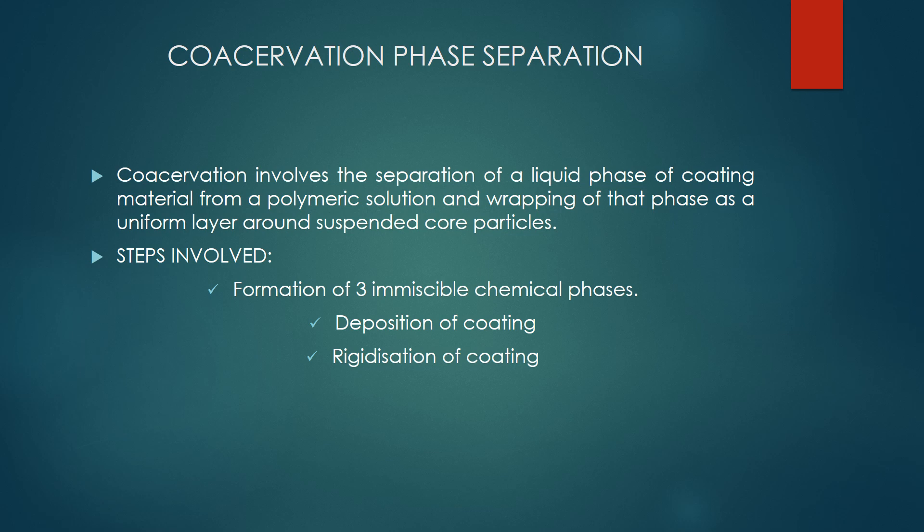Basically, there are three steps involved in coacervation phase separation. First is formation of immiscible chemical phases, because initially there will be one miscible phase in which the drug will be suspended. Second is deposition of the coating material around the API or core material. Third is rigidization of that coating material around the API or core material. The first step — formation of three immiscible chemical phases — will be discussed in today's lecture as it is the most important part.